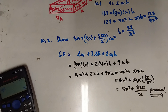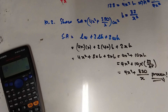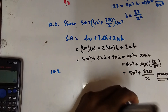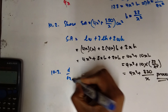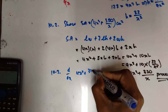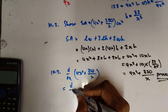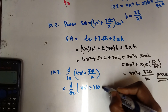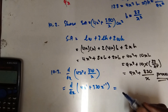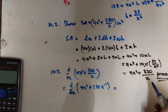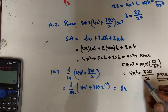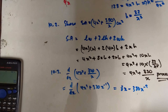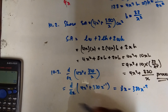10.3: Calculate the height of the box for which the surface area is a minimum. To find the minimum, we need the first derivative of the surface area and set it equal to zero. d/dx of (4x² + 320x⁻¹) gives us 8x − 320x⁻².